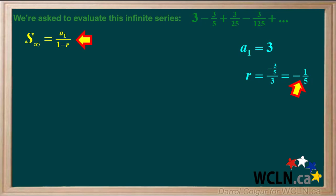Because r equals negative 1 fifth, which is between negative 1 and 0, this is a convergent series.